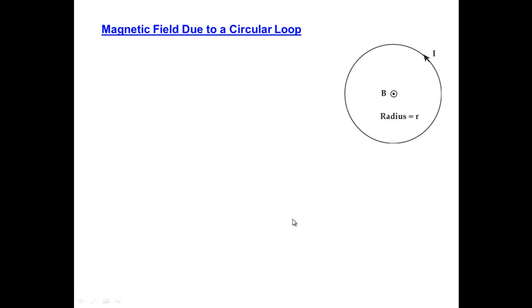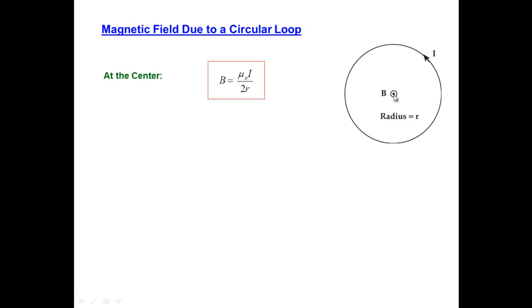Let's now look at the magnetic field due to a circular loop. I worked this out directly from the Biot-Savart Law in class. At the center of the loop, the result turns out to be very simple: B equals mu-naught I over twice the radius. The direction is out of the board at the center, because if you put your thumb along the direction of the current anywhere on the loop, the fingers curl around the wire and inside the loop they point out of the screen toward you.